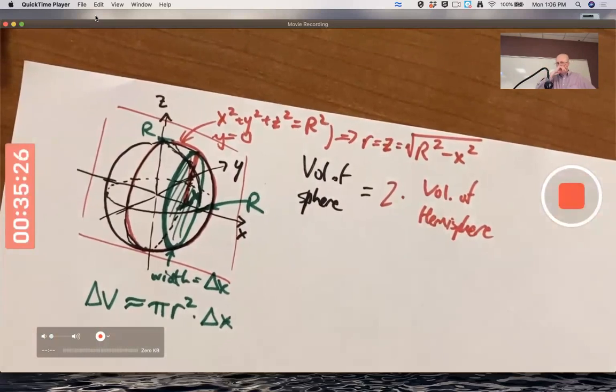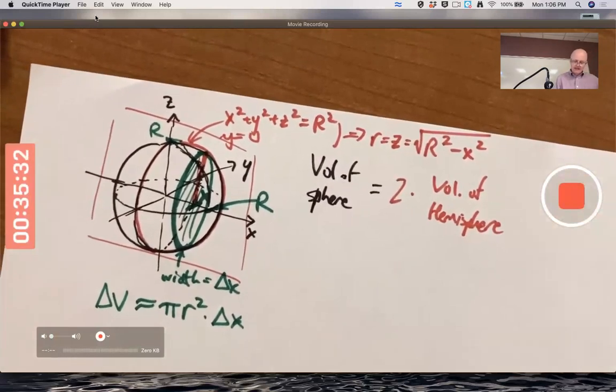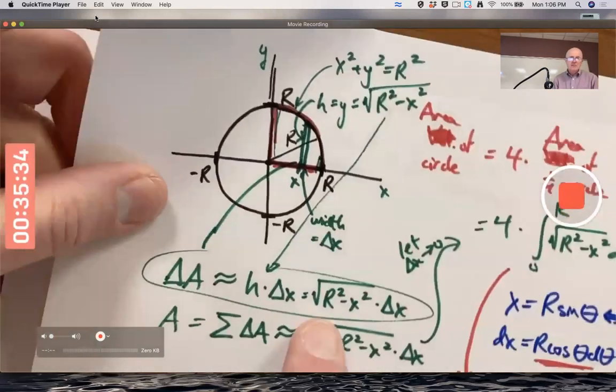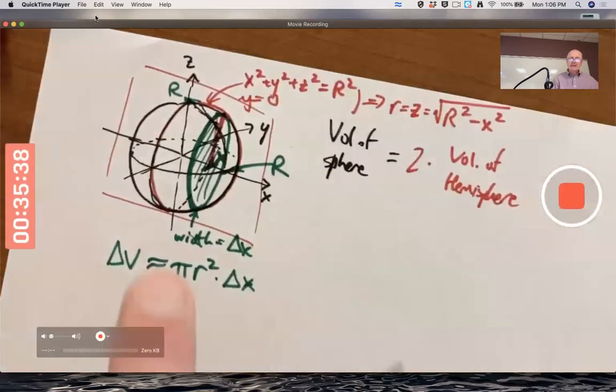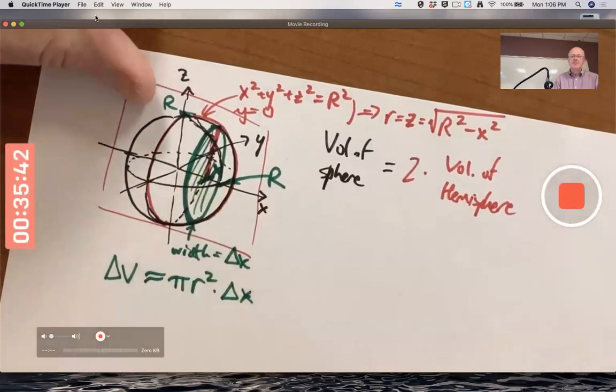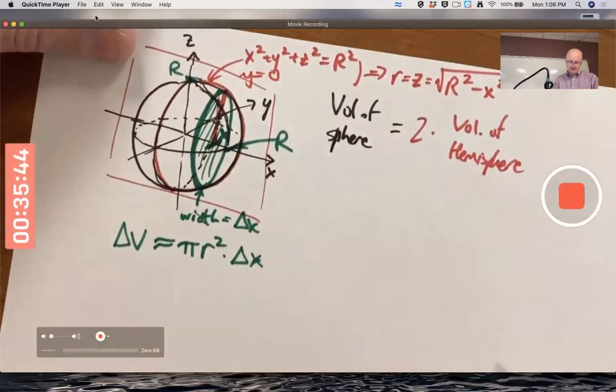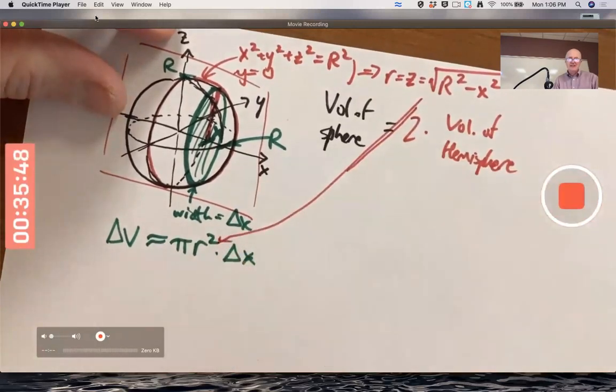The same, well, it wasn't a radius in that problem, but it was the same as the height in the circle example. Same as the height there is the radius of this thin disk. So plug that in here